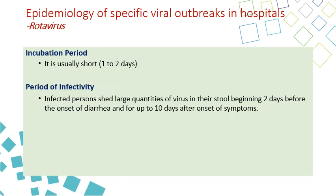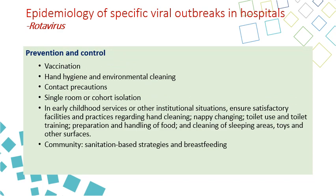The incubation period is very short, usually one or two days. The period of infectivity starts two days before the onset of diarrhea and continues for up to 10 days after the onset of symptoms. For prevention and control, there is a vaccine against rotavirus — a somewhat expensive live attenuated vaccine given in two to three doses, now included in childhood immunization in most countries. Hand hygiene and environmental cleaning are essential because of both direct and indirect transmission. Patients with rotavirus should be placed in contact precautions in a single room or cohorting of similar patients.